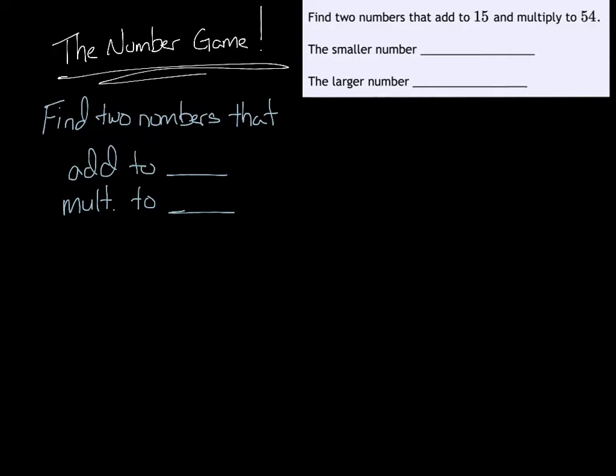Alright, these problems that I call the number game are extremely important later in the course and generally in advanced algebra, especially when factoring polynomials. The whole game is you're looking for two numbers that add to be a certain number and multiply to be a certain number. There's a lot of different techniques and methods for finding these two numbers. I'll share my method and hope that you can develop a method similar but that fits your styles.